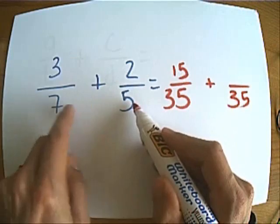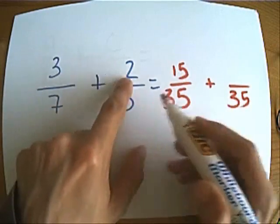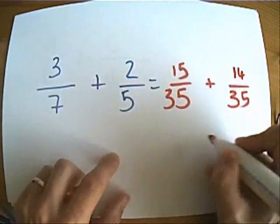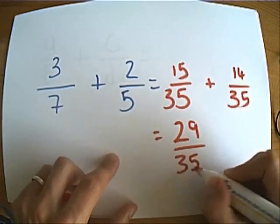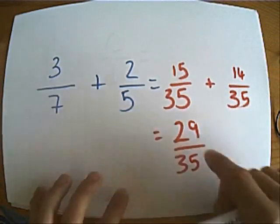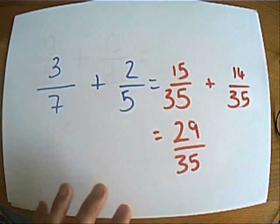And over here, I multiplied this by 7, so I've got to multiply the top by 7, which is 14. And we've added them together. In this case, we're going to get 29 over 35. And in this particular case, we can't cancel them down.